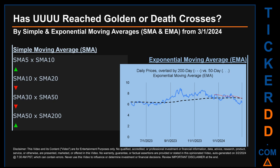Has UUUU price reached golden or death crosses? Golden cross and death cross are basic signals that compare average prices across two specified trade day ranges — a short-term versus a long-term range. For example, 5-day versus 10 trade days. Essentially, a golden cross is a bullish signal — it appears when a ticker's short-term moving average crosses above its long-term average. Vice versa, a death cross is a bearish signal when the short-term cross is below its long-term moving average.